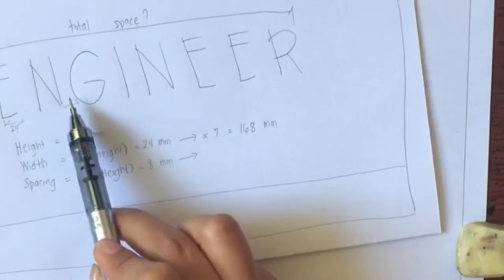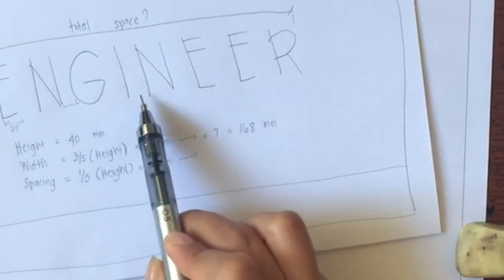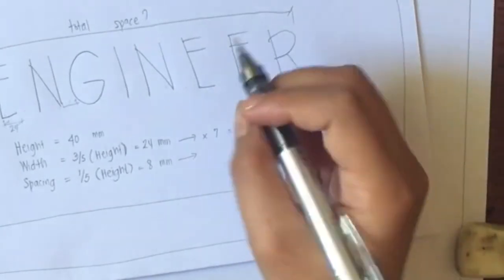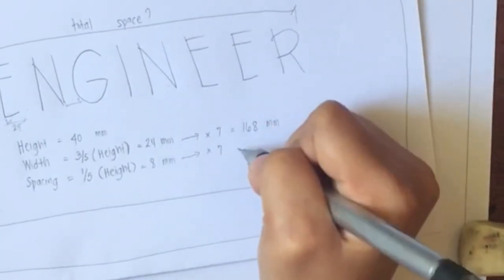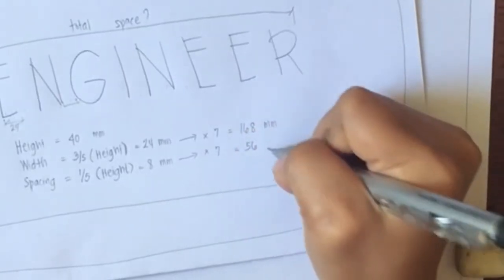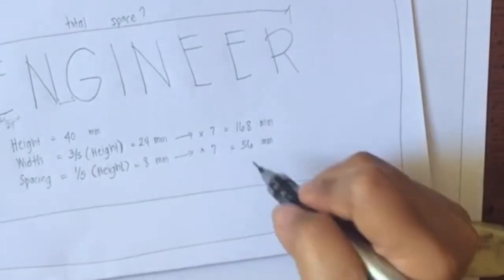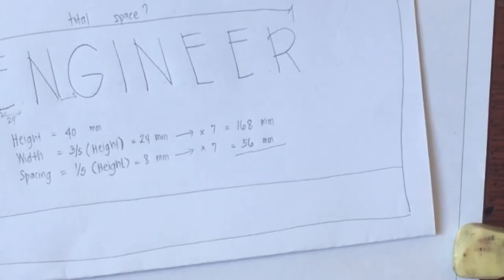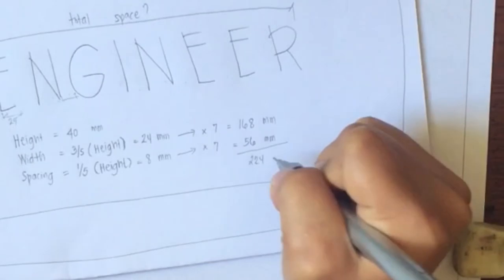So for our spacing, we have to count the spaces between the letters. So 1, 2, 3, 4, 5, 6, 7. There are 7 spaces. So 8 millimeters multiplied by 7 is 56 millimeters. And we will add that up: 168 millimeters plus 56 millimeters, that would equal to 224.